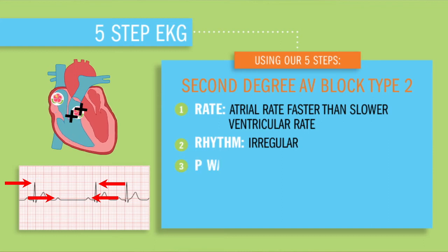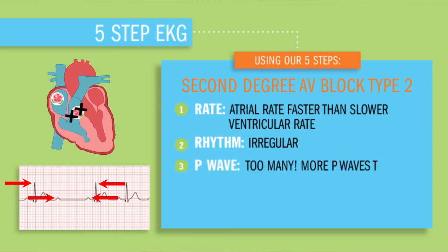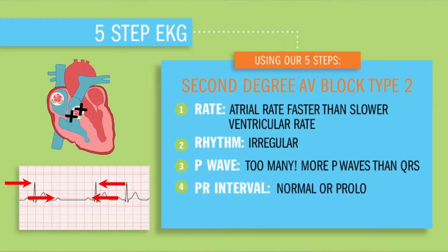Step three: the P wave — there's going to be too many. There'll be more P waves than there are QRS waves. Step four: the PR interval will be normal or prolonged — it basically just varies on where that P wave is located. And lastly, the QRSs are usually wide because those ventricles are taking a lot longer to contract.